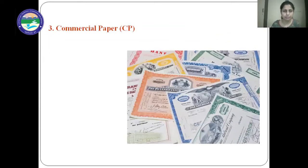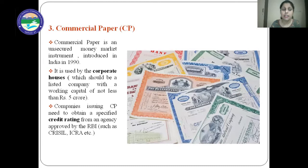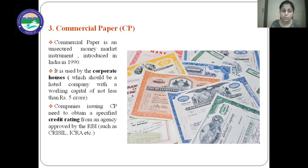Next is the commercial paper. Commercial paper is an unsecured money market instrument introduced in India in 1990. They are issued by corporate houses, and only those companies who have working capital of not less than rupees 5 crore and are listed on any stock exchange can issue commercial paper. The companies who issue commercial papers need to obtain a specified credit rating from an agency approved by the RBI, such as CRISIL, ICRA, etc.